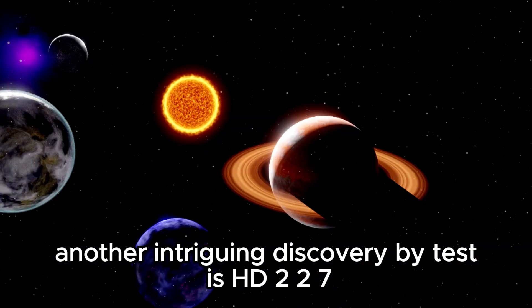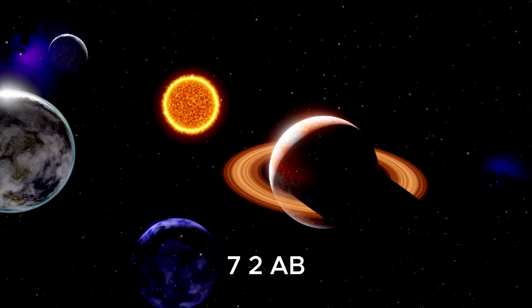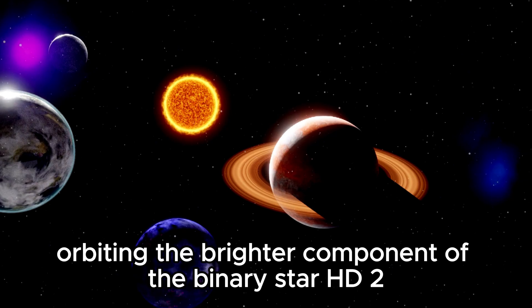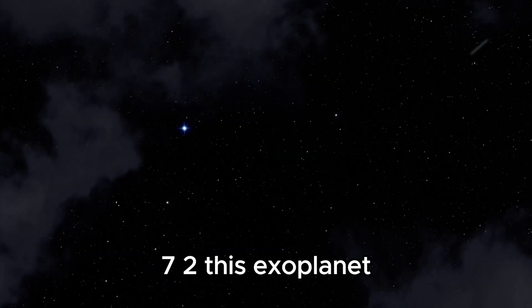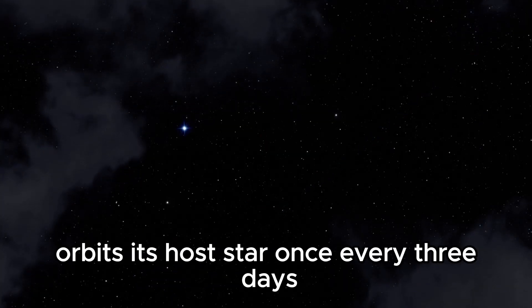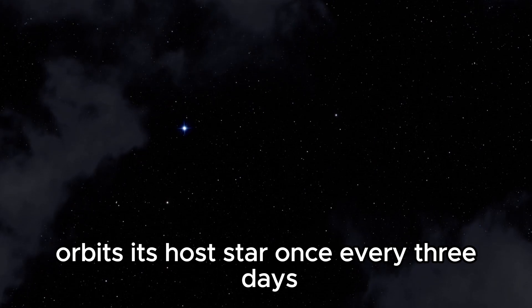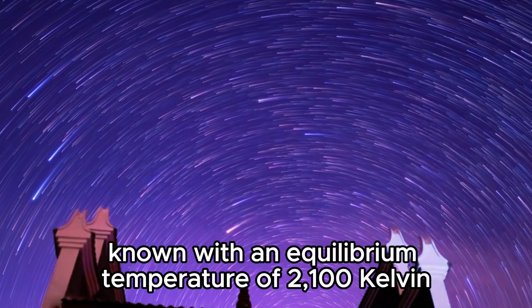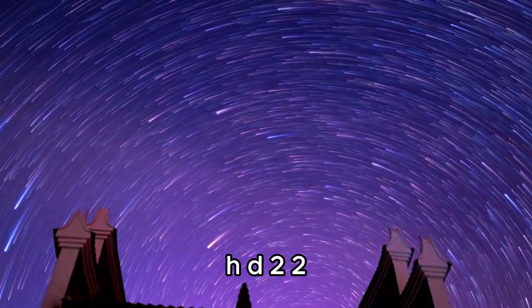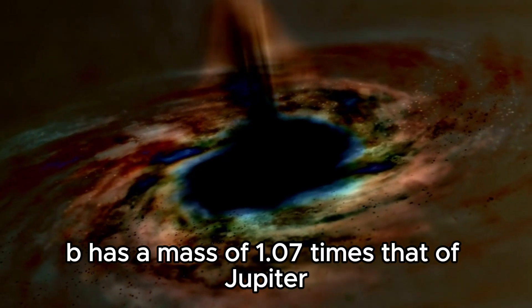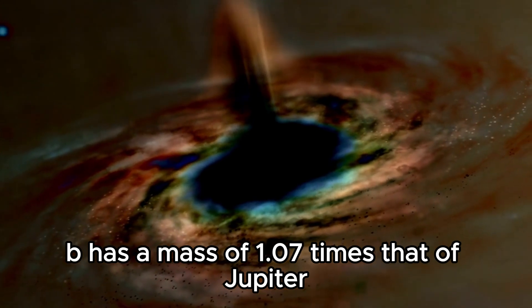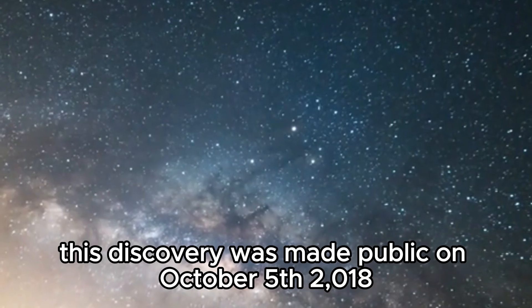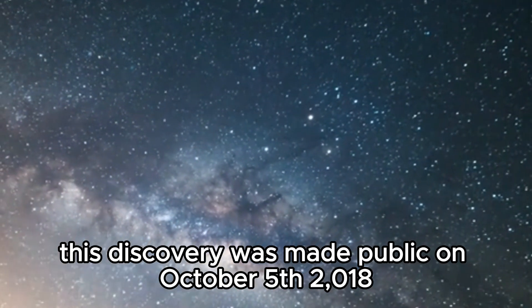Another intriguing discovery by TESS is HD 22772ab, a hot Jupiter orbiting the brighter component of the binary star HD 22772. This exoplanet orbits its host star once every three days and is one of the most strongly irradiated planets known, with an equilibrium temperature of 2100 Kelvin. HD 22772ab has a mass of 1.07 times that of Jupiter and an orbital radius of 0.28 astronomical units. This discovery was made public on October 5, 2018.